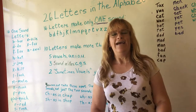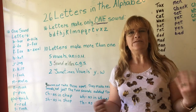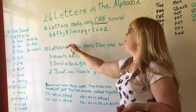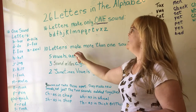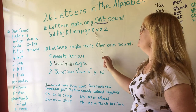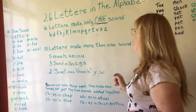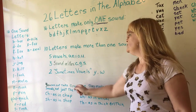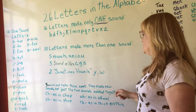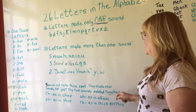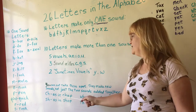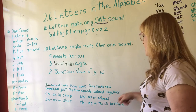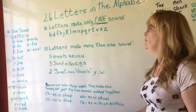Hello, welcome to Miss Rosa's story time. Today we're going over things to strengthen our reading skills — Miss Rosa's tutoring tips. In our last segment, we went over that there are 26 letters in the alphabet. 16 letters make only one sound, and 10 letters make more than one sound. We also have digraphs — ch as in chap, sh as in shop, wh as in wheel, and th as in thick or thin.